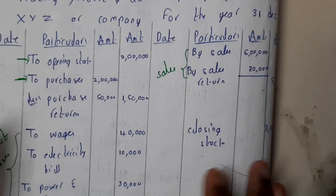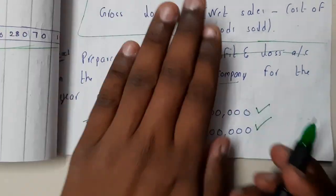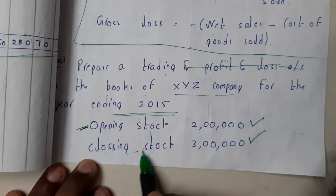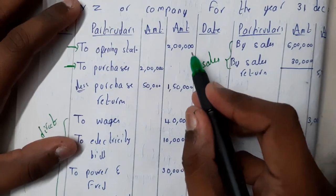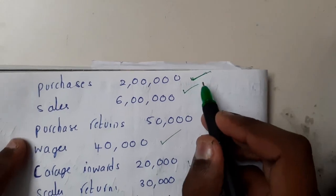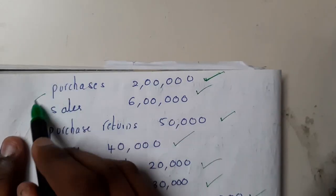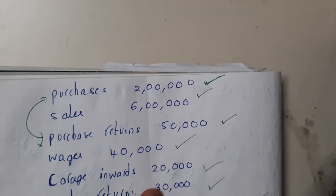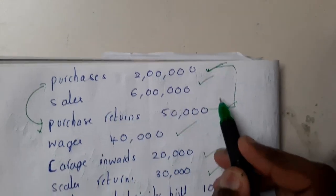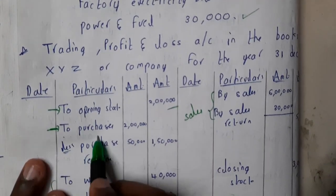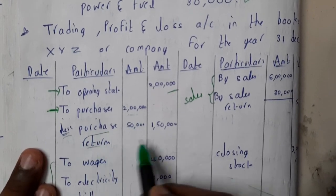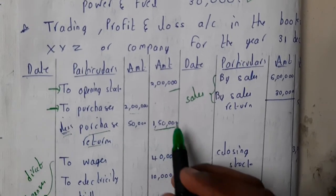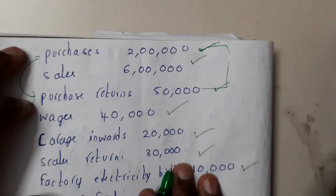Opening stock goes on the left side, closing stock on the right side. For purchases, they go on the left side paired with purchase returns — you purchased something and returned part of it, so the net amount is two lakhs minus fifty thousand, which is one lakh fifty thousand.